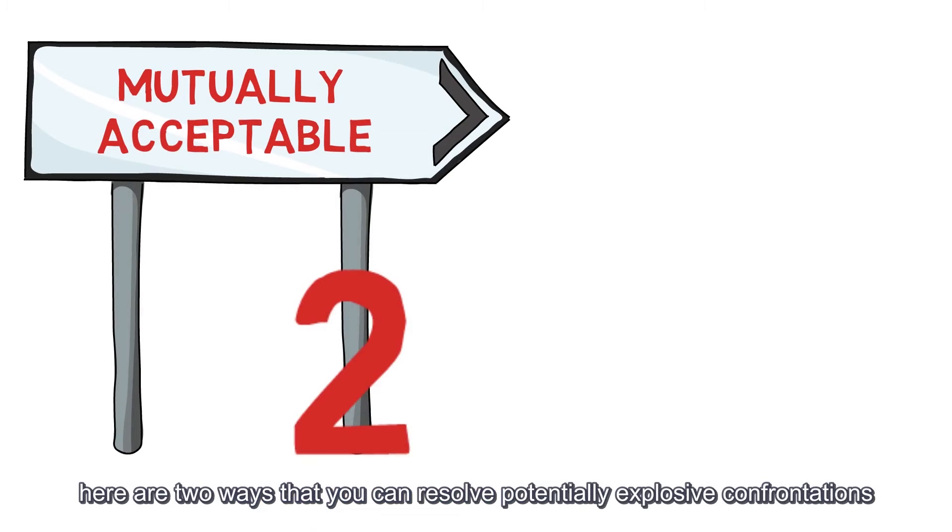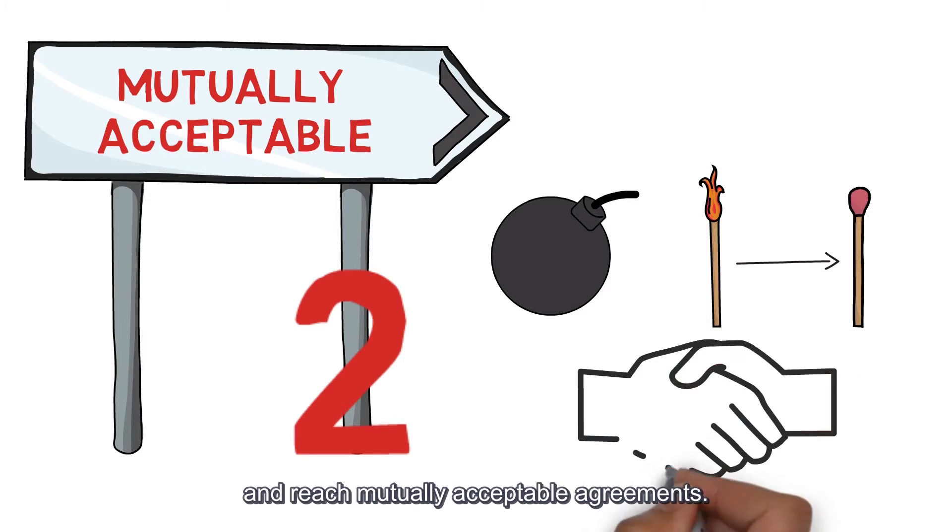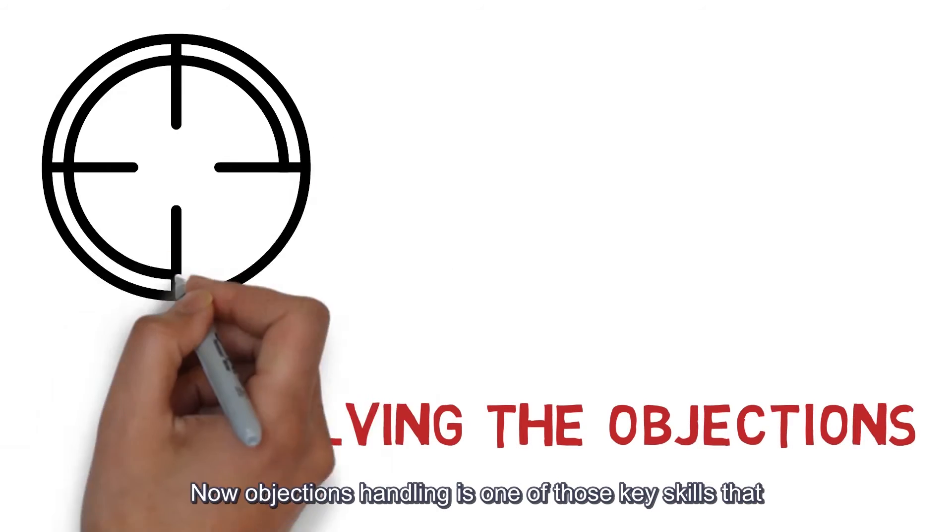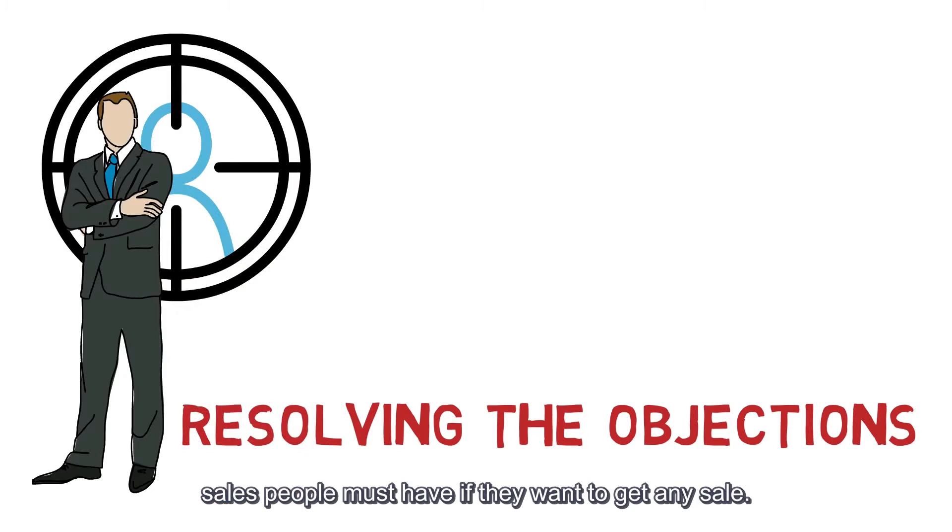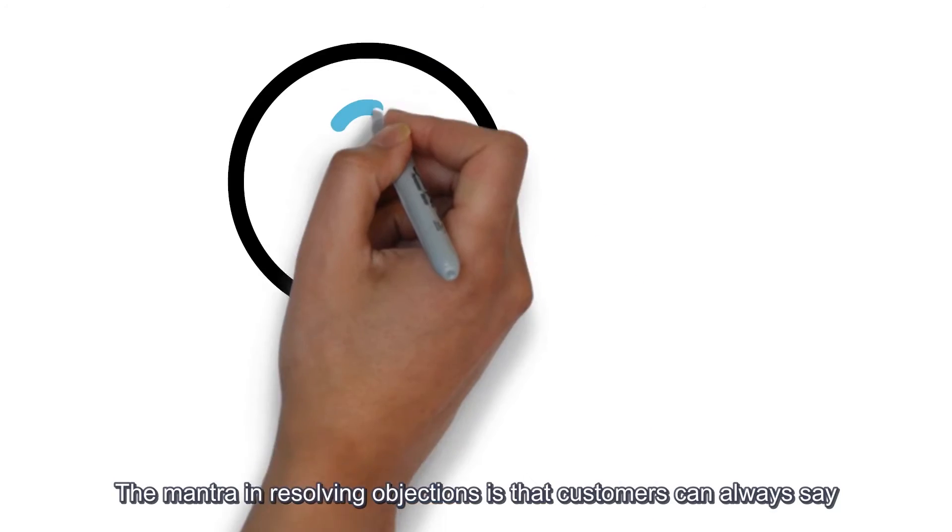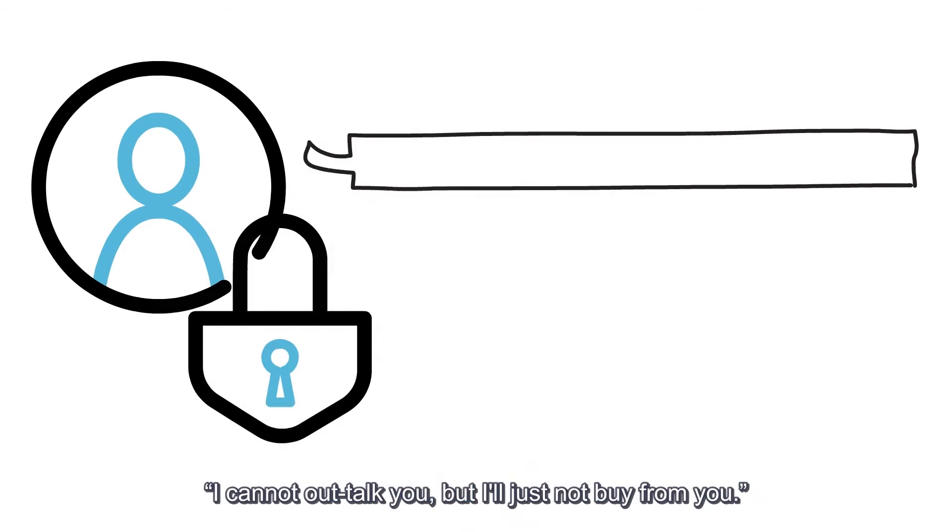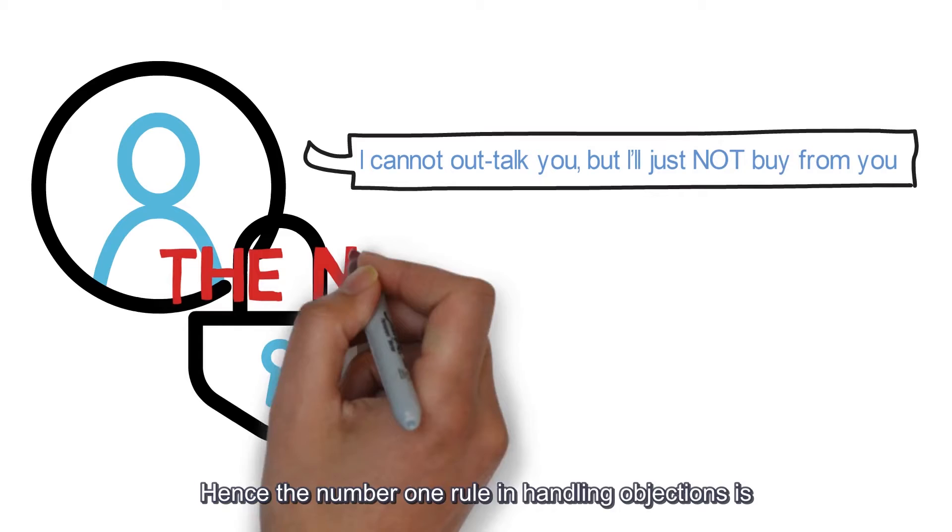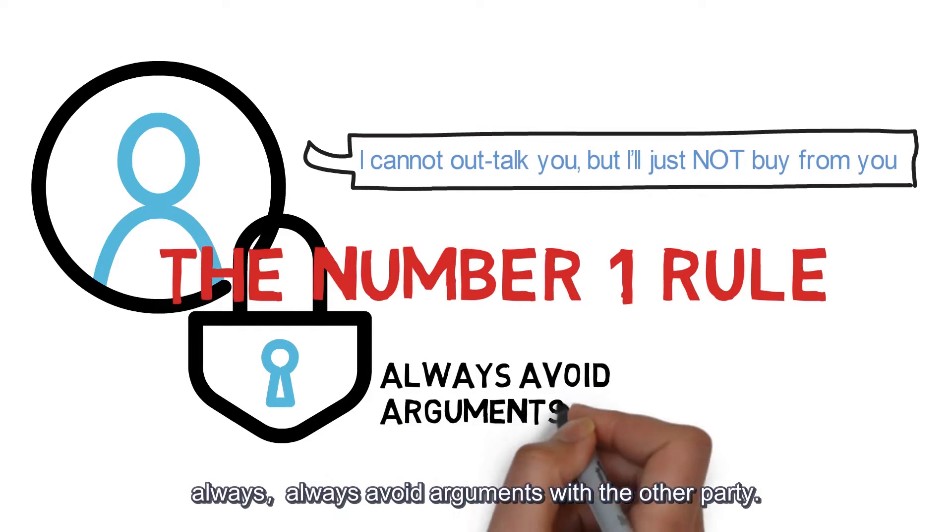Fortunately, here are two ways that you can resolve potentially explosive confrontations and reach mutually acceptable agreements. The first one is about resolving objections. Objections handling is one of those key skills that salespeople must have if they were to get any sale. The key purpose of handling objections is not about proving that you are right and the customer is wrong. The mantra in resolving objections is that customers can always say, I cannot out-talk you, but I'll just not buy from you. Hence, number one rule in handling objections is always avoid arguments with the other party.